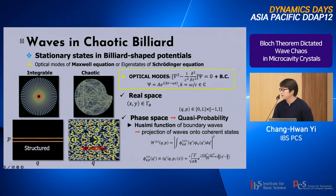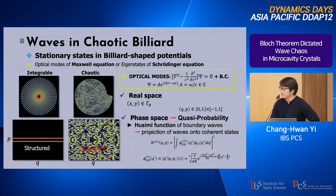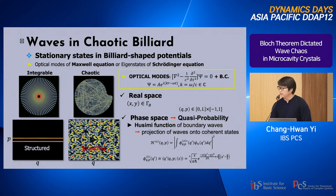In order to compare wave properties in classical phase space, we introduce quasi-probability distributions. Here I use the Husimi distribution function, which is a projection of a wave onto a coherent state. In another description it can be regarded as a smoothed Wigner function. In integrable systems, the Husimi functions are well-aligned and localized in invariant tori-like structures, whereas in chaotic systems they spread over the entire phase space.